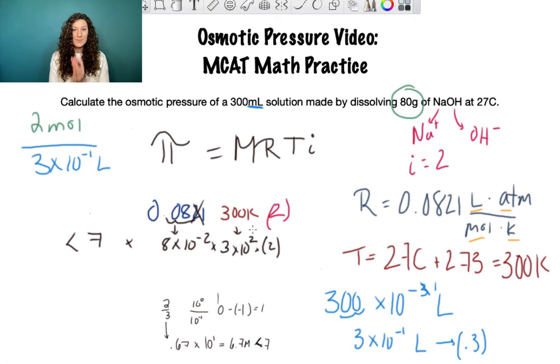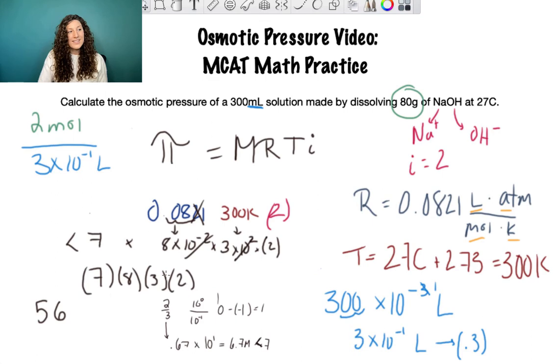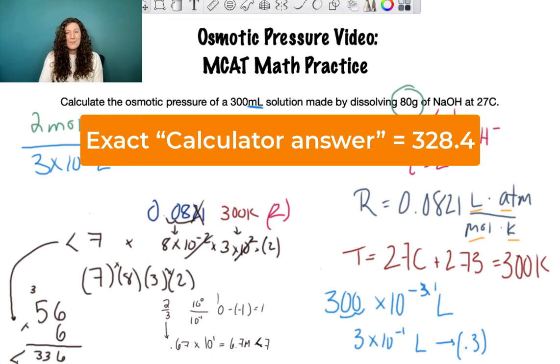Less than 7 times 8 times 10^-2 times 3 times 10^2 times 2. We can separate the mantissa from the exponents. We have 7, 8, 3, and 2. The exponents 10^-2 times 10^2 cancel out. So we just multiply these four single digit numbers. 7 times 8 is 56, 3 times 2 is 6, then 56 times 6: 6 times 6 is 36, 5 times 6 is 30, which gives us less than 336. The actual answer was 328.4 which on the MCAT is close enough.